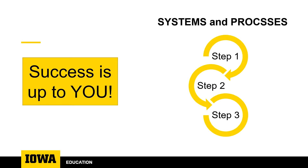Certainly both play a role. We can all think of times when a person did not have and couldn't develop the skills necessary for a job. But most of the time, the success of our people is dependent on the systems and processes we have in place to support their development. What the Baldrige Model emphasizes is the idea that the systems and processes you use to manage your workforce will have a major effect upon the success of your people, and that when people are successful it's because we have fully functioning systems and processes.